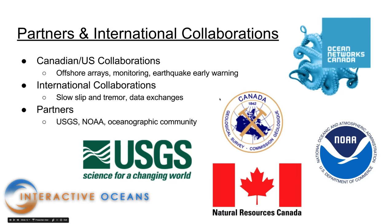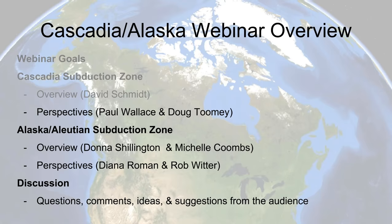Potential partnerships in Cascadia: there are existing international partnerships between Canada and the U.S., including collaboration on offshore arrays, earthquake early warning, and seismic monitoring data sharing. Within the slow-slip and tremor community there are opportunities for international data sharing and collaborative processing. Inherent partners include the USGS, NOAA, and the oceanographic community. At this point the presentation passes to Paul Wallace and Doug Toomey for their perspectives on important questions in Cascadia.